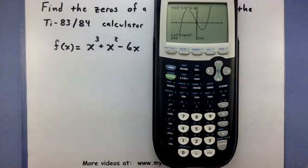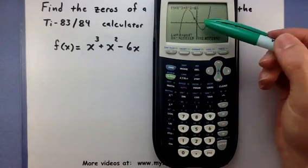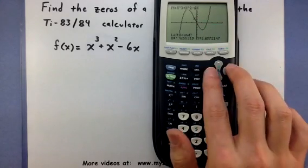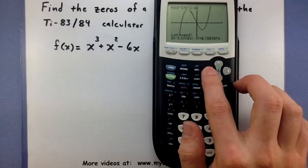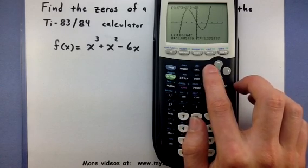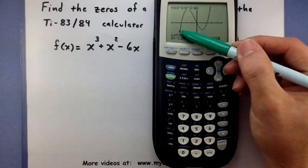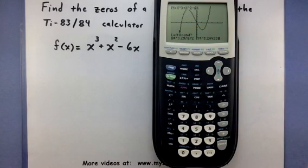Now I have to basically box in these zeros to help the calculator start to find them. So right now it's asking for a left bound. If I use my arrow keys, I have this little blinking cursor on the screen that starts to move. So I want to move this little blinking cursor so it is somewhere on the left side of the zero I'm looking for. There we go. So this is the zero I'm trying to hunt down and I've moved this cursor somewhere on the left side. I'm going to press enter.